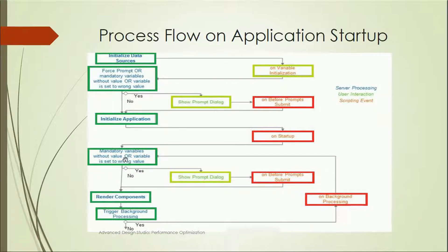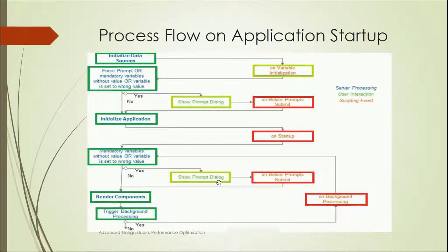Once the application is initialized — whether it has prompts or not — it reaches the 'on startup' event. After the user enters prompt values, the application initializes. When the application dashboard launches, it checks again for mandatory variables without values. If any exist, it shows the prompt dialog, submits, and finally renders the components — such as containers, charts, and dropdowns — then background processing starts based on user interaction.